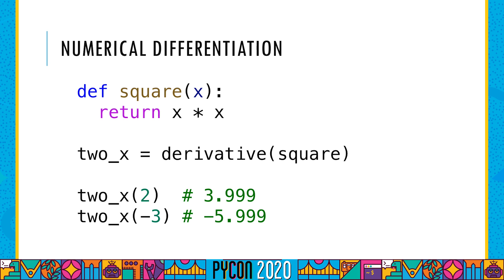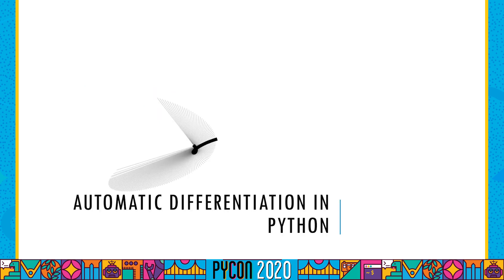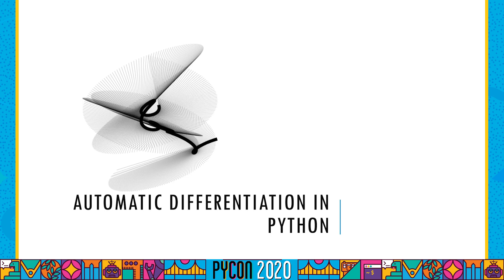If you input 2, you'll get about 3.999. If you input negative 3, you'll get about negative 5.999. The goal of this talk, though, is not to teach you how to compute derivatives by hand, though I can assure you it's quite fun. It's almost the opposite of that.